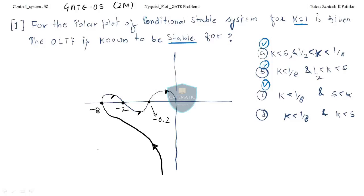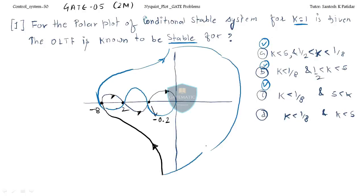We have seen how to find out stability by Nyquist criteria. If you have to draw the polar plot, you can easily draw the Nyquist plot. The direction is clockwise, and this is the Nyquist plot. We have to check system stability and find out the k values. Since k is not given explicitly, k equal to 1 is given, so for k=1 the plot is as shown.